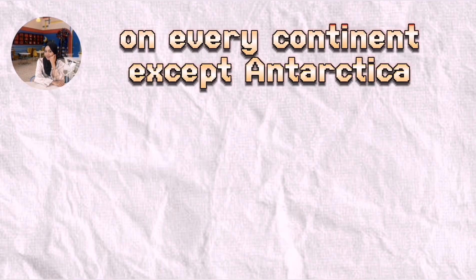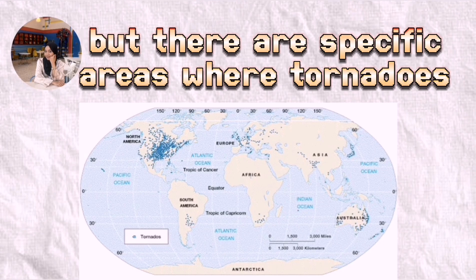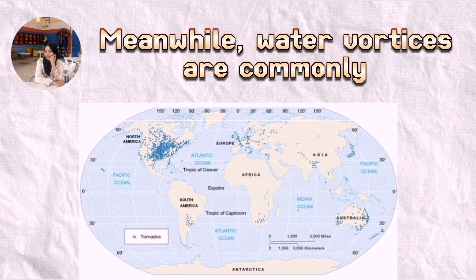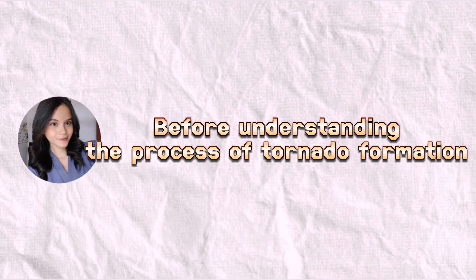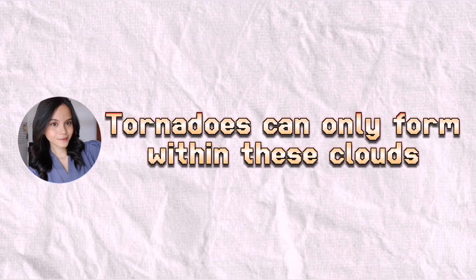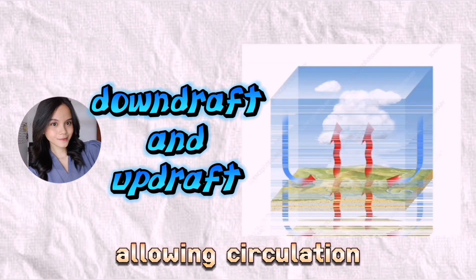There's a fun fact: tornadoes can be found on every continent except Antarctica, but there are specific areas where tornadoes occur more frequently than elsewhere. Meanwhile, water vortexes are commonly found at the bottom of waterfalls. Before understanding the process of tornado formation, we need to know about Cumulonimbus clouds. Tornadoes can only form within those clouds. Inside Cumulonimbus clouds, there's something called downdraft and updraft, allowing circulation.